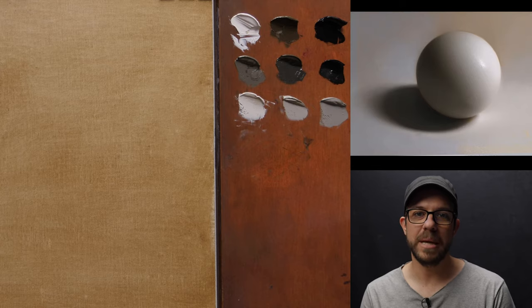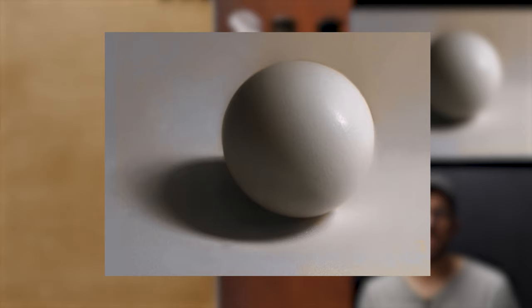We're going to be working on an oil painting of a sphere. Now this is the same sphere that we've used in all our drawing exercises to help us understand the different elements of visual phenomenon that we are going to be interacting with when we're trying to make representational artwork.